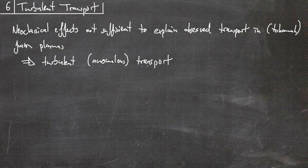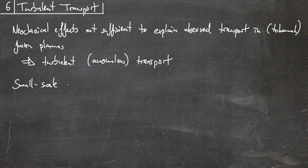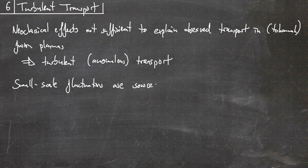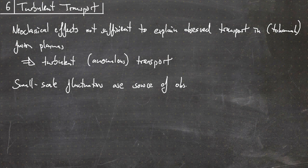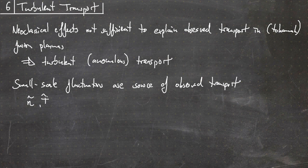This is due to small scale fluctuations, those are the source, the origin, of the observed transport. Those are small scale fluctuations in density, in temperature, and also in the plasma potential.